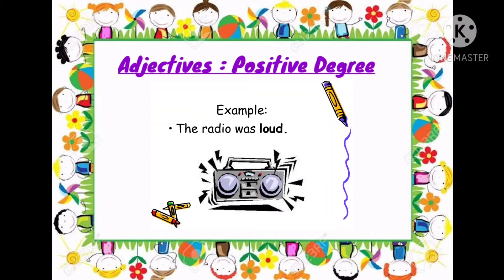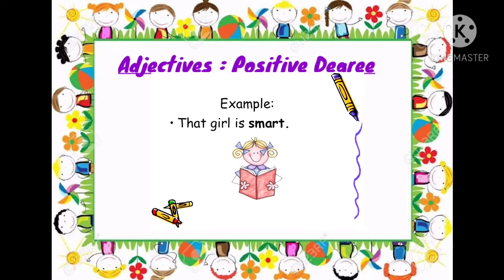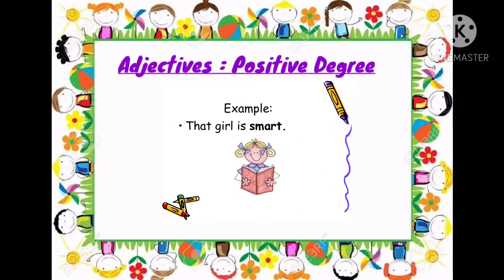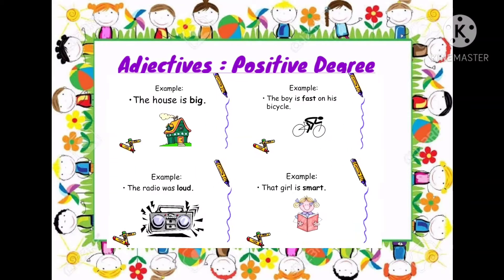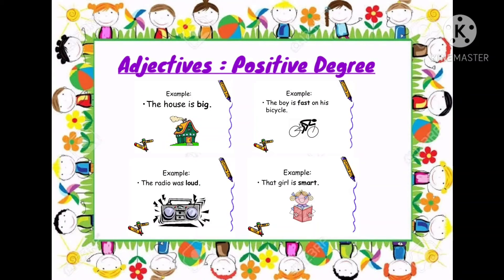Another example is 'that girl is smart' — here also we are talking about a particular girl and her quality is being mentioned that she is smart. So students, when we simply talk of one person or thing having a quality, it is said to be in positive degree of comparison or positive degree of an adjective.